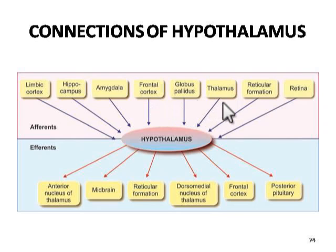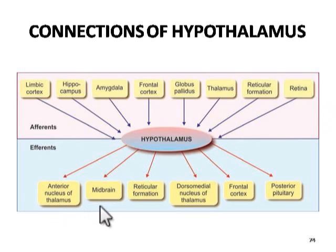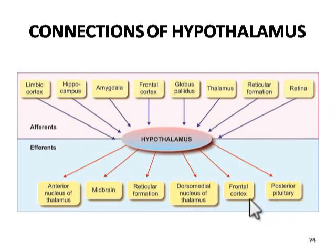The efferent connections, or motor connections, of the hypothalamus go mainly to the anterior nucleus of the thalamus, midbrain reticular formation, dorsomedial nucleus of the thalamus, frontal cortex, and posterior hippocampus. These are the efferent connections — fibers from the hypothalamus reach these structures.